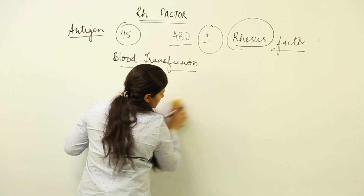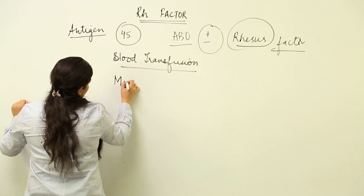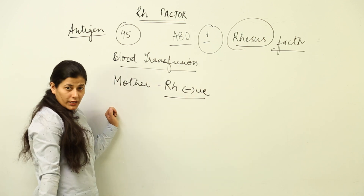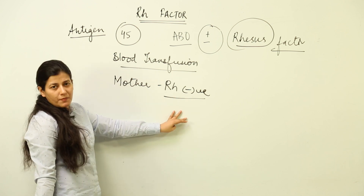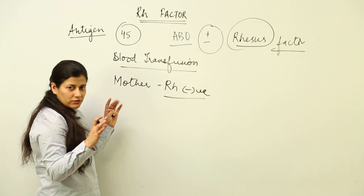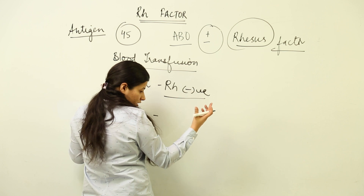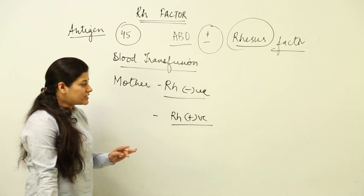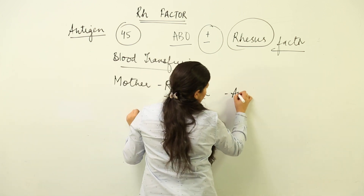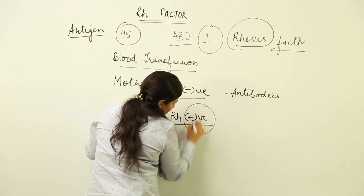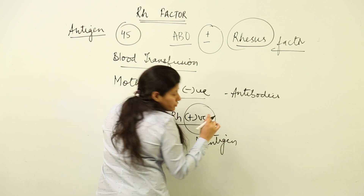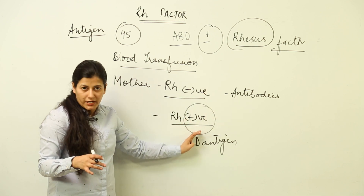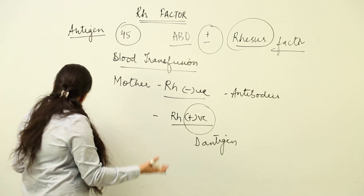Supposedly the mother is Rh negative — that means she does not have the antigen. She normally does not have Antigen D, so antibodies would be present inside the body but because no antigen is there, the mother would be leading a normal life. Now this mother is pregnant with a child who has Rh positive blood group. Inside the body of the mother, antibodies will be produced against Antigen D. But due to the presence of the placenta, and this being the first encounter in the mother's body, these antibodies will not be strong enough to harm the first child.